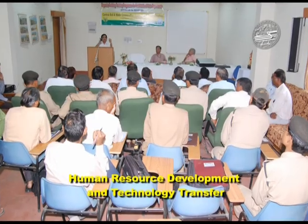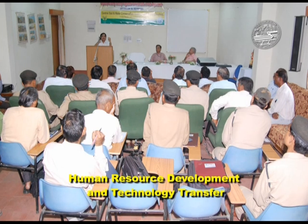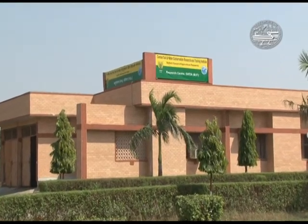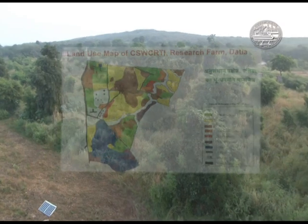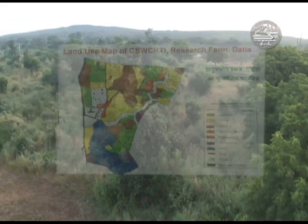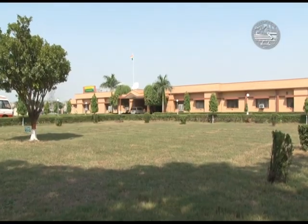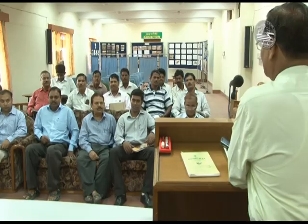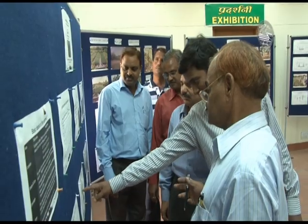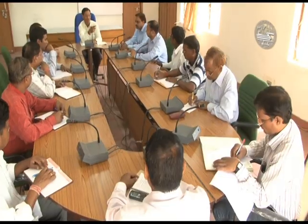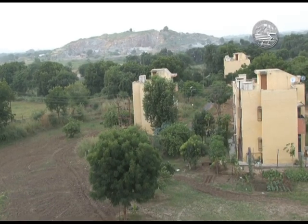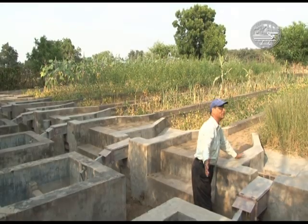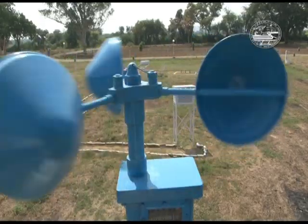The research centre is spread over a 191 hectare area with the main office building which accommodates research laboratories, a library, conference hall, museum cum exhibition hall, a committee room, staff residential quarters, a farmer's hostel and a research farm with a meteorological observatory.